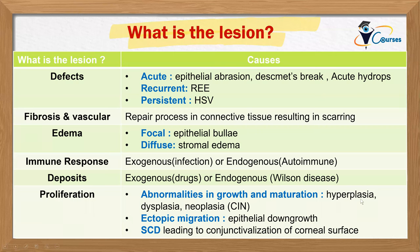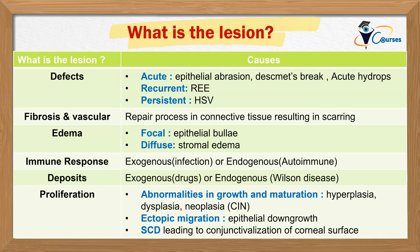Finally, the lesion could be a proliferation — abnormalities in growth and maturation such as hyperplasia, dysplasia, neoplasia, or carcinoma in situ involving the nasal limbus invading the cornea. It can also be ectopic migration, as in epithelial downgrowth after refractive surgery or extracapsular cataract surgery. Or it could be stem cell deficiency, where the conjunctiva creeps over the corneal surface — as in chemical burns, Stevens-Johnson syndrome, and ocular cicatricial pemphigoid — causing conjunctivalization of the corneal surface due to loss of the barrier between cornea and conjunctiva.